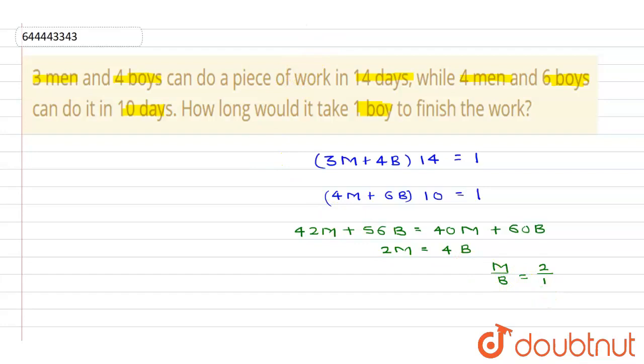Let us consider this equation: 3 men plus 4 boys into 14 days will complete the work. Therefore, 3 men is equal to 6 boys, this is what we can say using this.